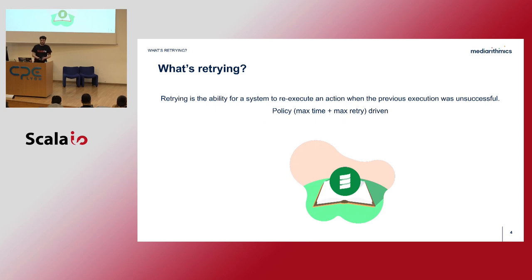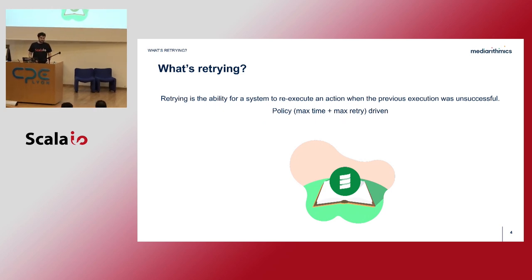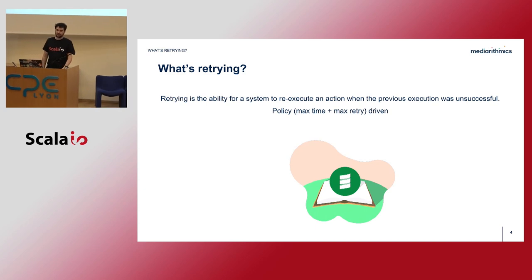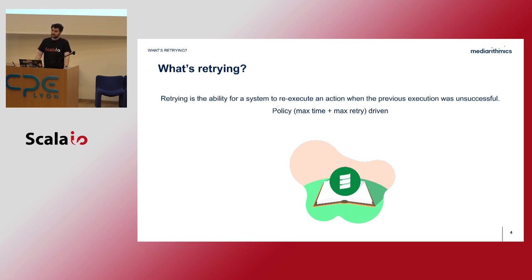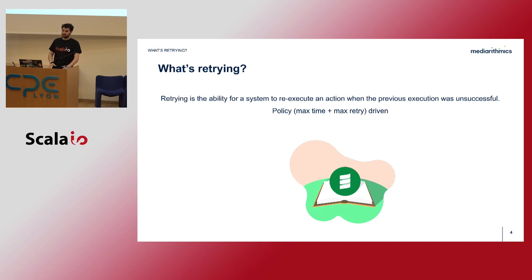Let's start with a dummy definition. What's retrying? Retrying is the ability for a system to re-execute an action when the previous execution was considered unsuccessful. Most of the time, and in most libraries you'll find in any language, this is driven around some max time — maximum time of execution, maximum time between retries — and some number of retries. In the first part of this talk I will show you the basic building blocks of cats-retry to express those retry policies, and then I will show you how to retry over your effect.